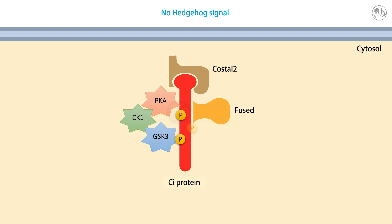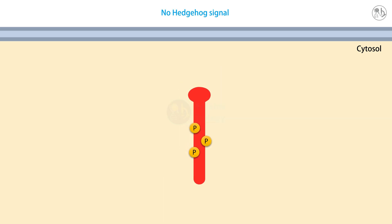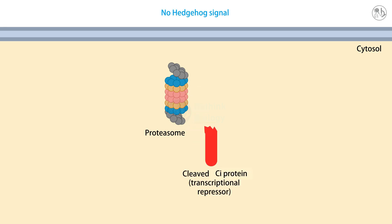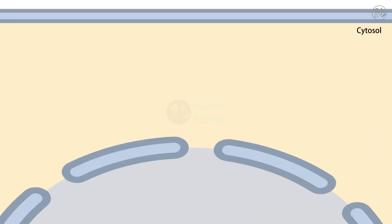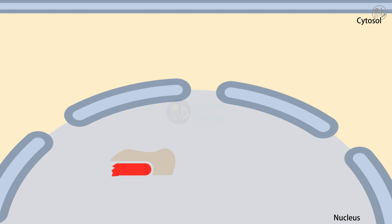These proteins phosphorylate Ci, which marks it for cleavage by the proteasome. As a result, Ci is cleaved by proteasome and forms a transcriptional repressor which accumulates in the nucleus, binds with its corepressor, and keeps Hedgehog target genes inactive.